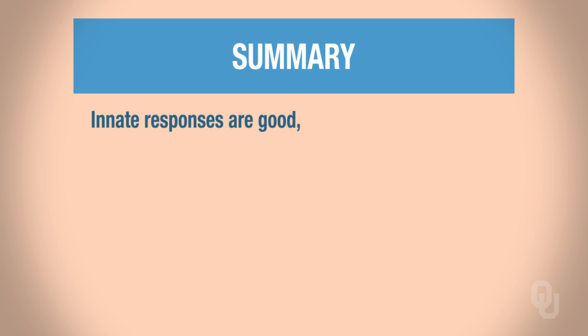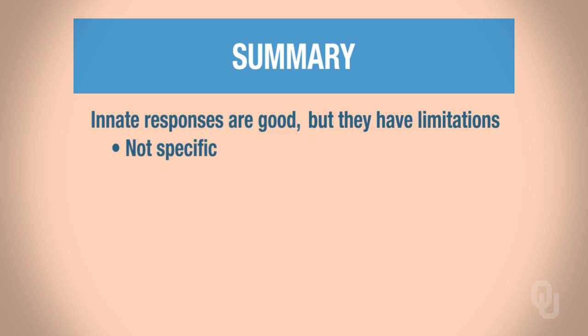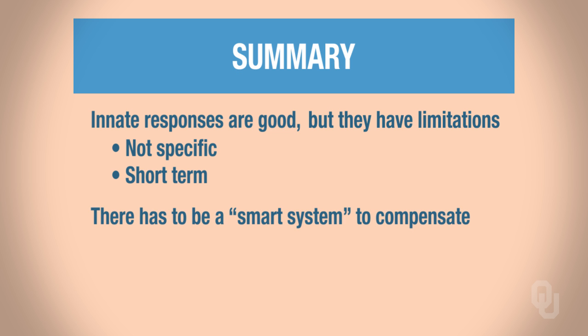Innate responses are quick but have limitations: they're not specific — they won't kill specific bacterial species — and they're short term. Because of these limitations, you need a smarter system, which is what adaptive immunity is all about. In the next part, we'll start discussing adaptive immunity, specifically the characteristics of B and T cells.